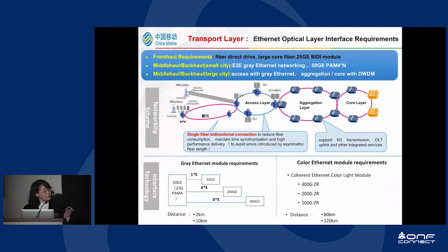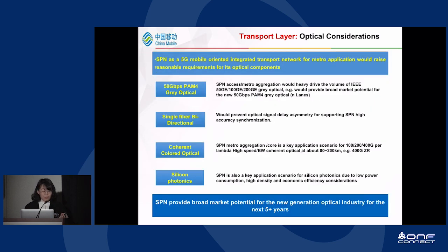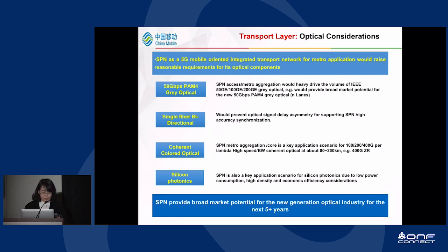Looking at the transport layer in more detail, we list Ethernet optical interface requirements for fronthaul, midhaul, and backhaul. For fronthaul, fiber direct drive with large-core fiber and 25 Gbps modules is required. We also distinguish requirements for midhaul and backhaul for small and large cities. For SPN as a 5G mobile-oriented integrated transport network for metro applications, the optical component requirements are: 50G gray optical, single-fiber bidirectional, coherent colored optical, and silicon photonics. SPN provides broad market potential for new-generation optical industries.